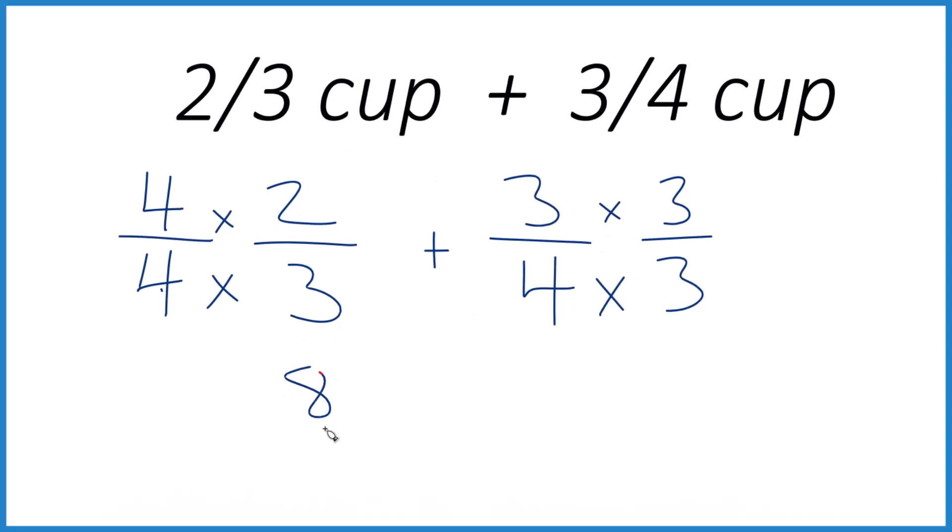Four times two is eight. Four times three is twelve. And eight-twelfths, that's an equivalent fraction to two-thirds. Plus three times three is nine. And four times three is twelve.